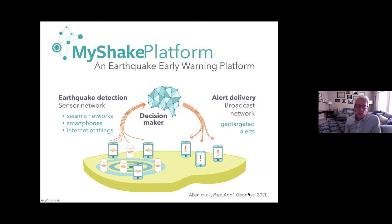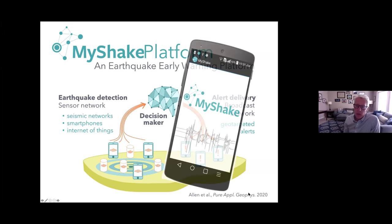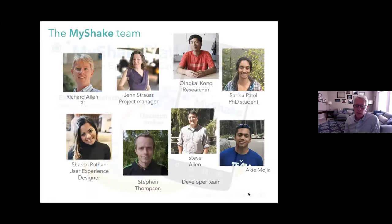The MyShake platform is primarily a smartphone app, though there's no reason other elements couldn't provide data into the system or use other alerting pathways. MyShake was developed at UC Berkeley by a small, hard-working group. Richard especially highlighted Ching Kai Kong, now a researcher at the Berkeley Seismology Laboratory, whose PhD largely involved developing the capabilities of the MyShake network.